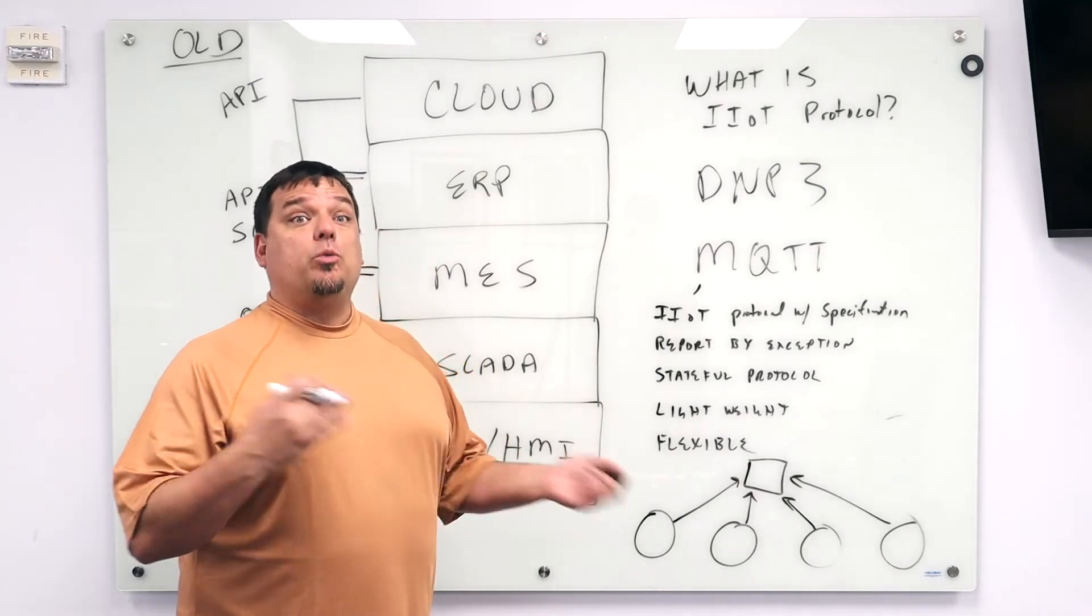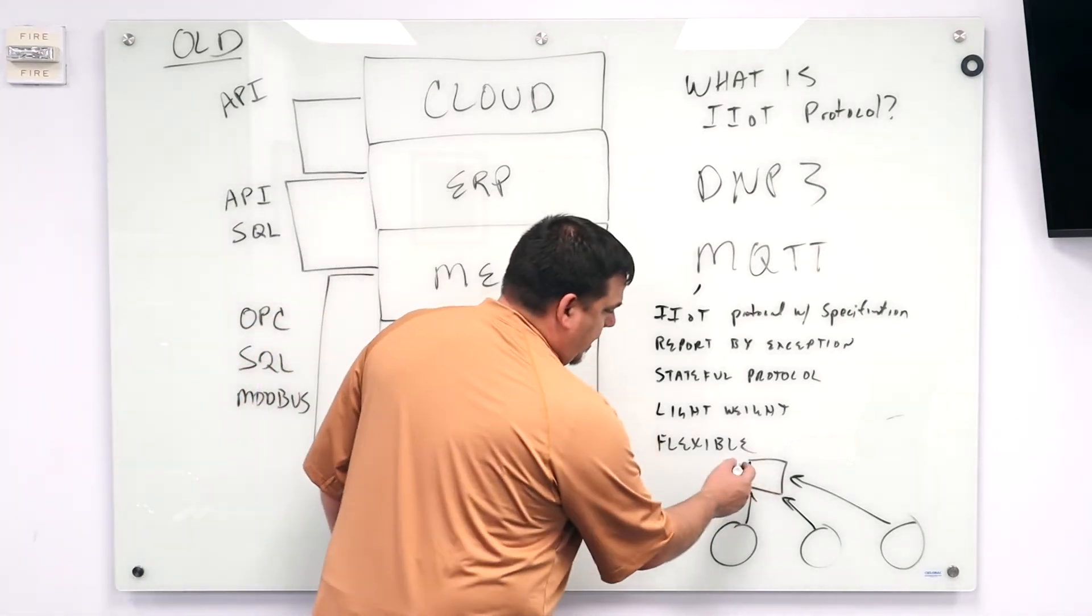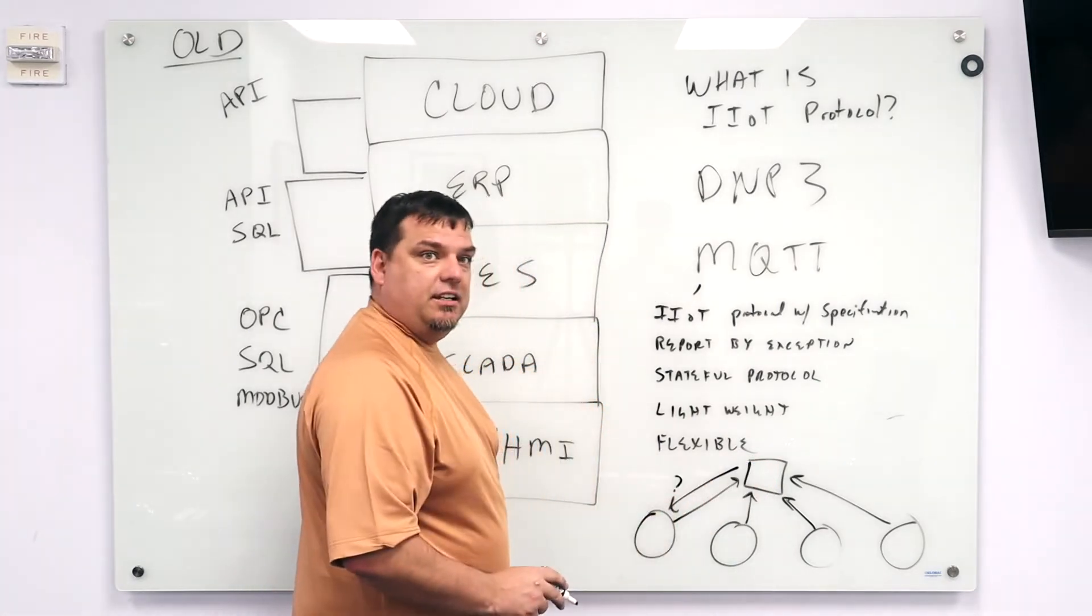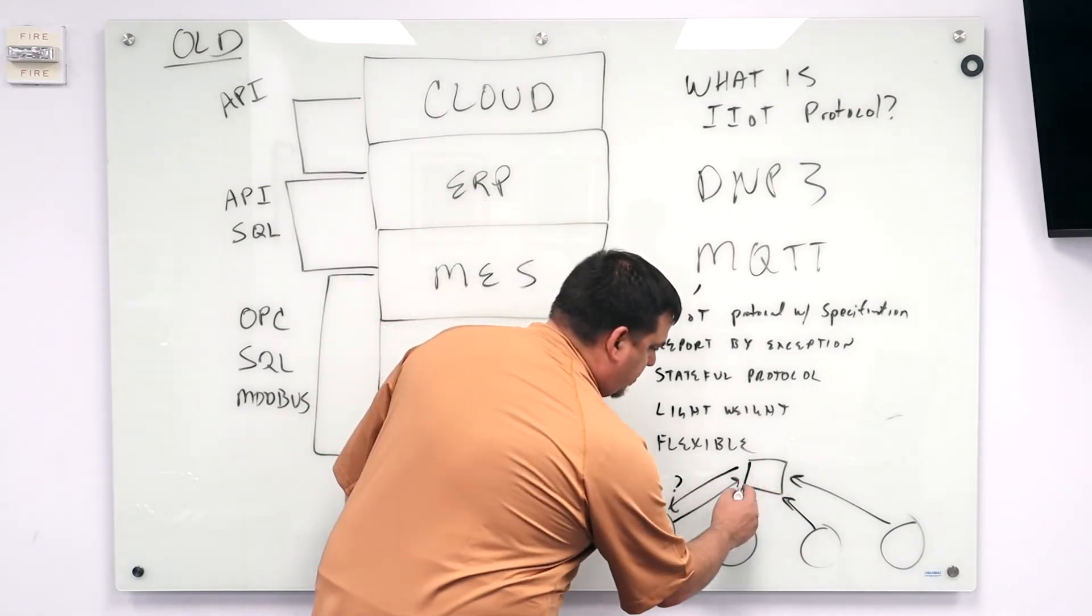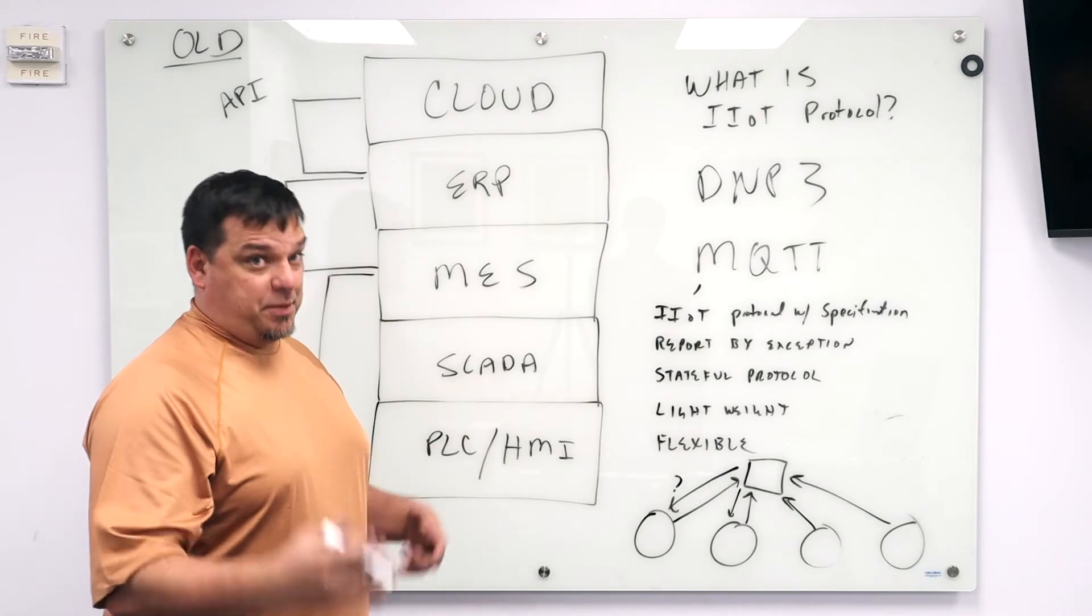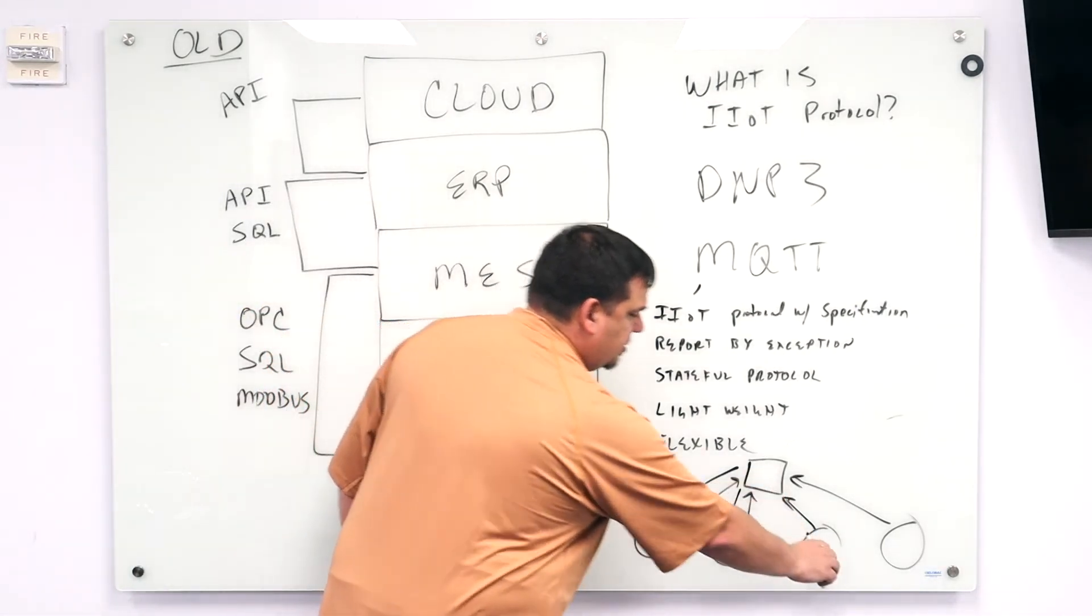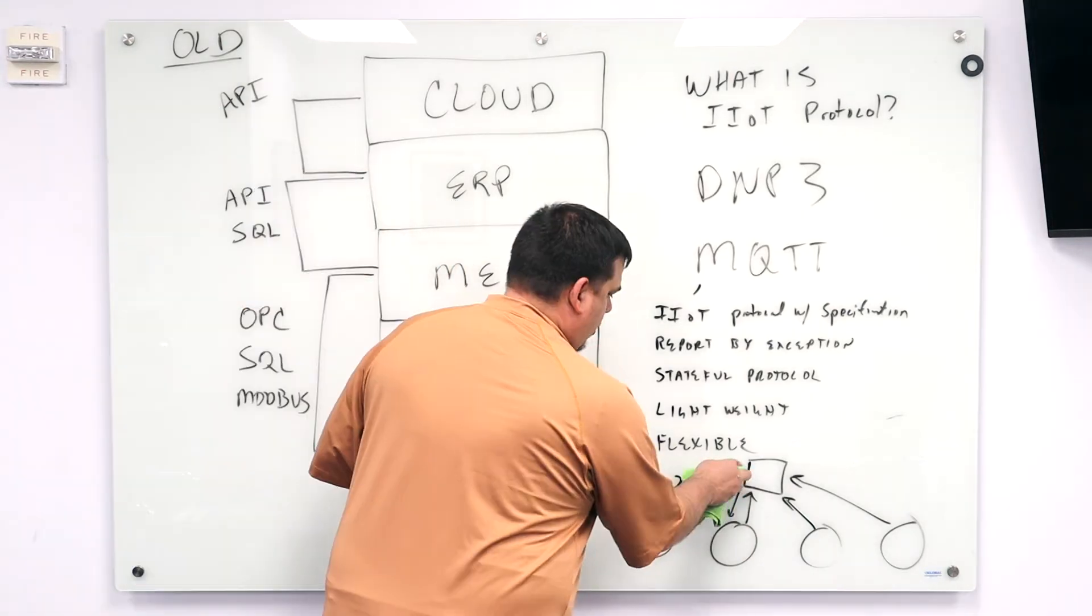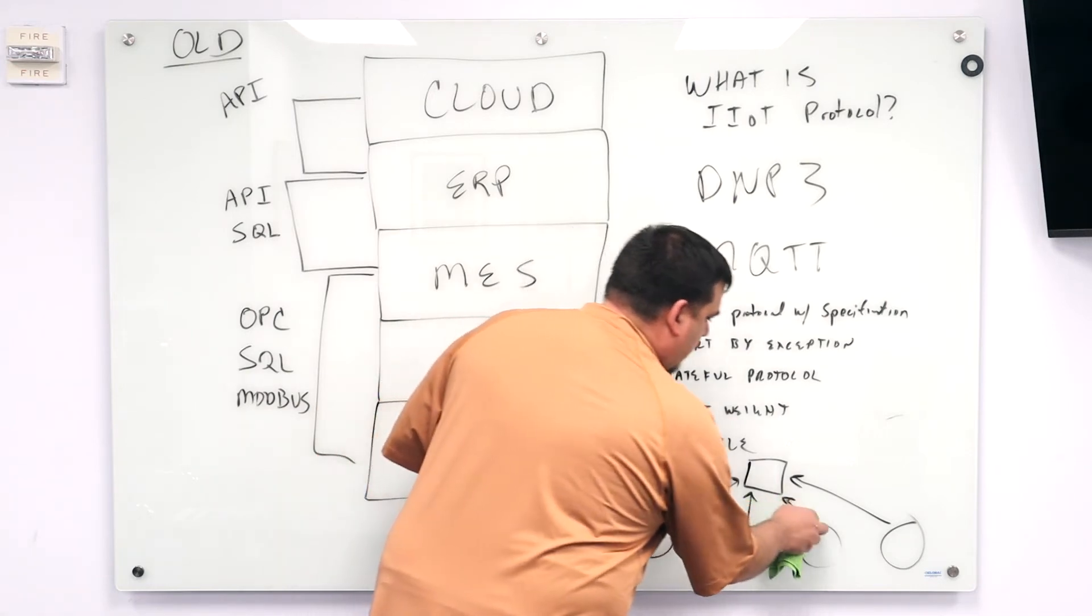The traditional way is a poll response method, right? OPC UA, which we'll see over here in a second. OPC UA, where my server makes a request to the PLC and the PLC responds to the server. Then it moves to the next request. The advantage of IIoT protocols, specifically MQTT, is that MQTT publishes the changes to the broker. Only the things that changed, report by exception. So obviously what you can see is bandwidth is much lower and it's much more efficient.